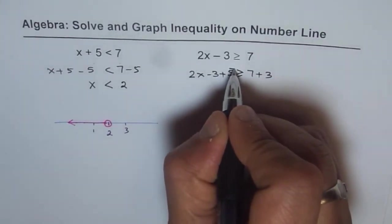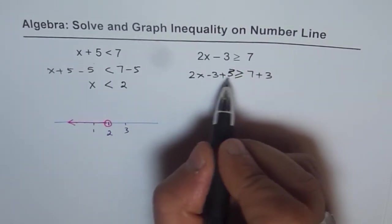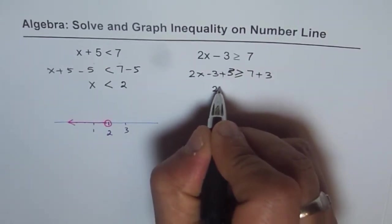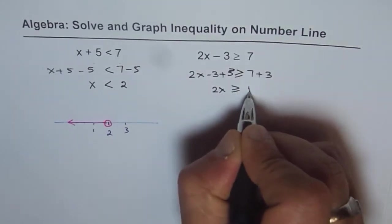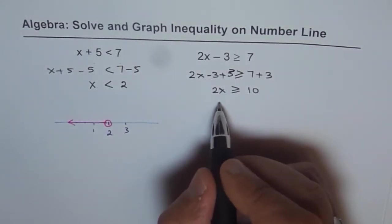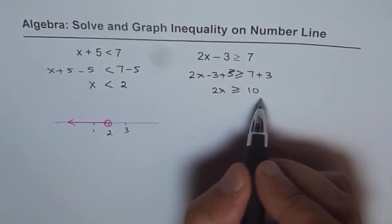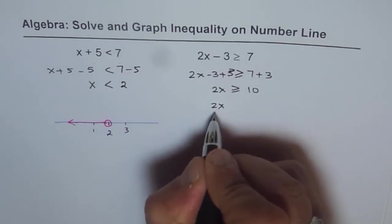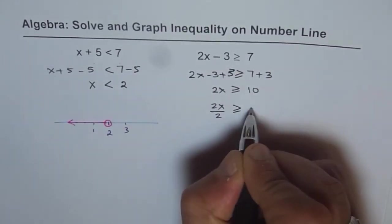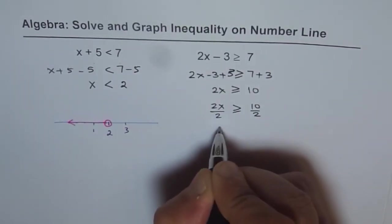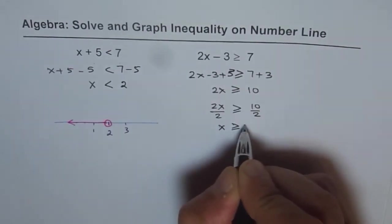Now, this is 3. Now, minus 3 plus 3 is 0. So you are left with 2x is greater than or equal to 10. Now, to get x, we need to divide by 2 on both sides. So we get 2x divided by 2 is greater than or equal to 10 divided by 2 or x is greater than or equal to 5.